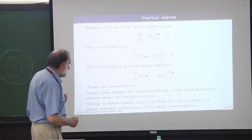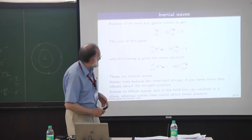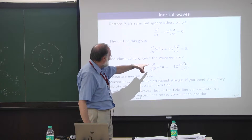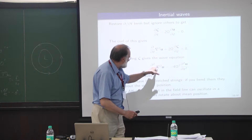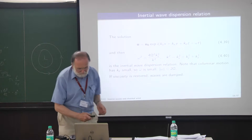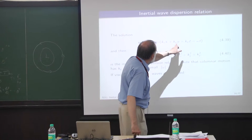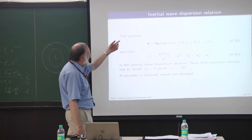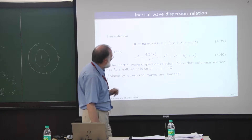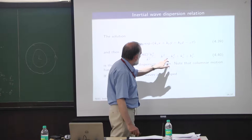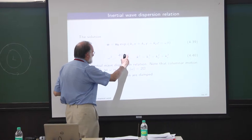We have this wave equation with inertial waves. It's slightly different from the usual wave equation on a stretched string because of the extra del-squared term. We look for solutions u₀ e^{i(k_x x + k_y y + k_z z - ωt)} and substitute into the differential equation to get the dispersion relation — the relationship between omega and the wave numbers, where k-squared is the sum of squares of the individual wave numbers. The rotating case has k_z squared on the top.